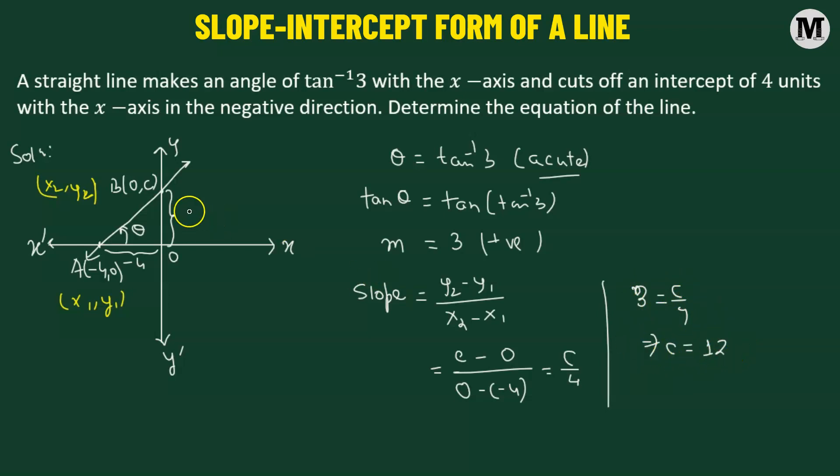So we now have the y-intercept value. So this value is actually C, the height, or height of the point B from the origin, so that's 12 units. So now we have the y-intercept, we have the slope of the line.